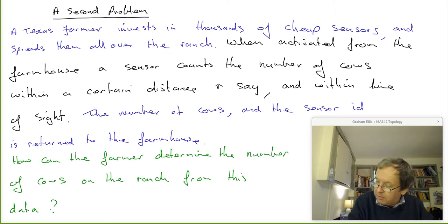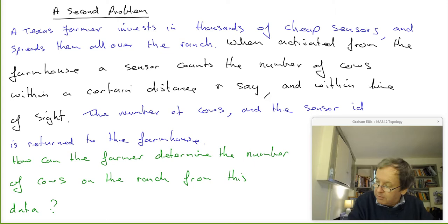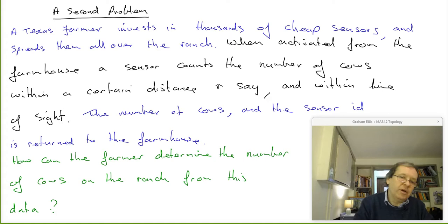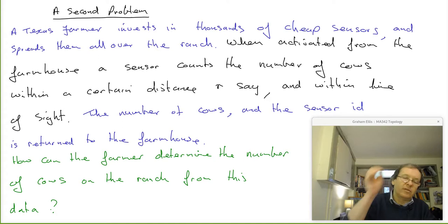That's a very artificial problem — I made it up because I didn't want to talk about insurgents from the axis of evil. But you can think of better examples: maybe the number of anglers on Lough Corrib, and the Corrib Angling Association buys sensors and places them all over the lake. You can vary the problem to your heart's content. I'll stick with cows.